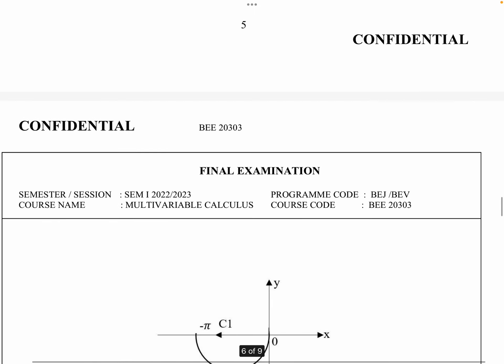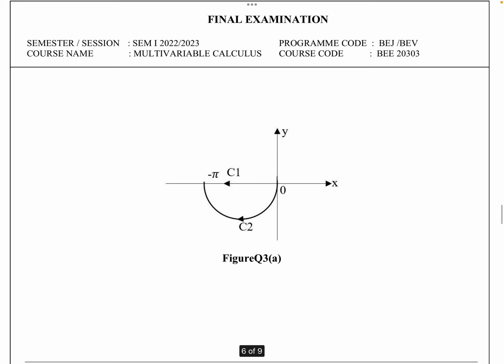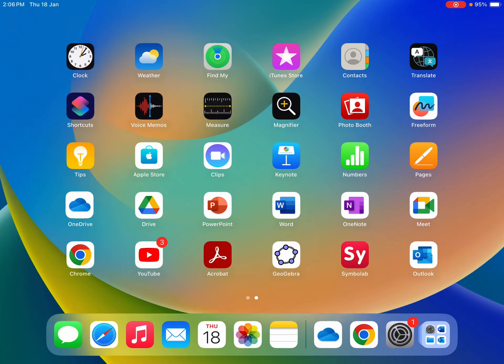In Figure 3a, you can see two paths. Both paths start from the origin (0,0) and end at (-π, 0). We have path C1 and path C2, and we want to determine whether F is conservative or non-conservative.